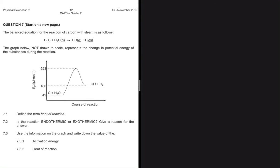So 7.1 is quite an easy one. Heat of reaction is the amount of energy released or absorbed per mole in a chemical reaction. The amount of energy released or absorbed per mole in a chemical reaction. So that's 7.1.